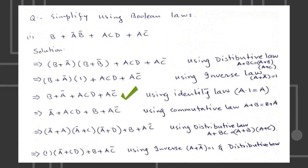Now we have B plus A bar plus ACD plus AC bar. We can rearrange it using commutative law. Now, again we can apply distributive law and inverse law to simplify.